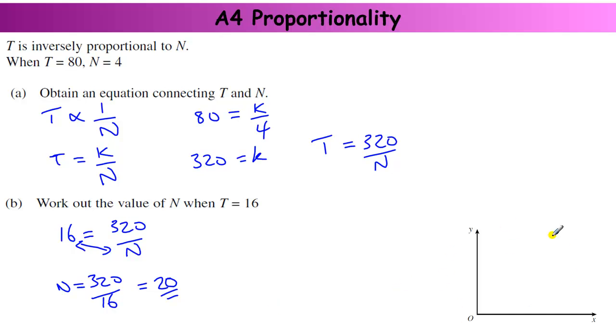And again, this is not part of the question, but what does this graph look like? When it's inversely proportional, that means that it is a reciprocal graph. So it looks like this. It curves down. It never reaches the y-axis or the x-axis. It just curves away. There we go, three examples. Talked you through examples.